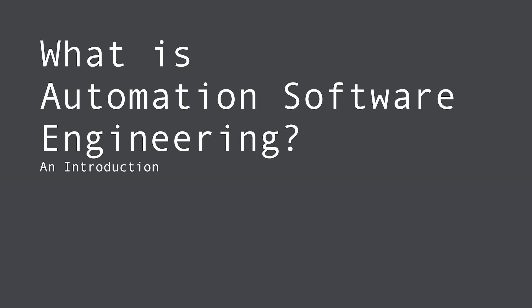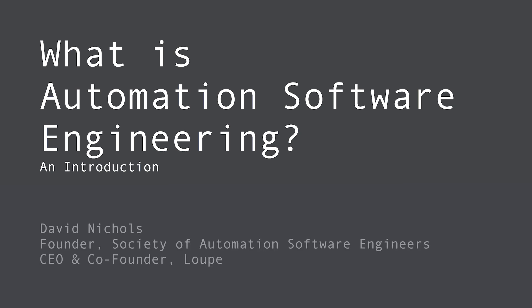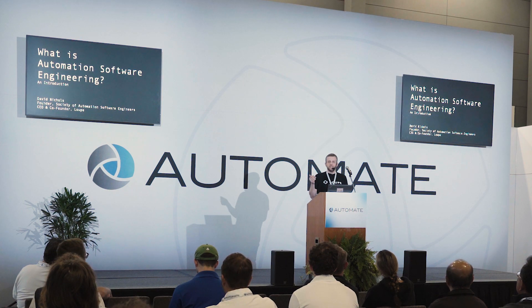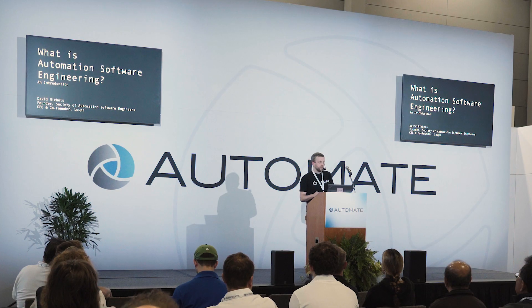My name is David Nichols. I started a group called the Society of Automation Software Engineers last year, and now I need to explain to everybody what automation software engineering is. I'm also the CEO and co-founder of a company called Loop, which I founded in 2007, which is 17 years ago now.